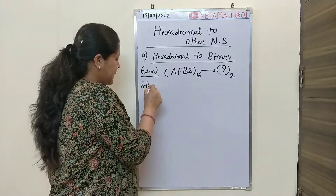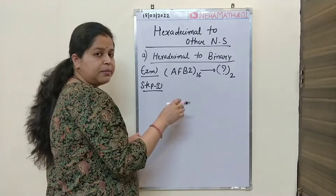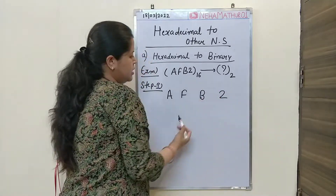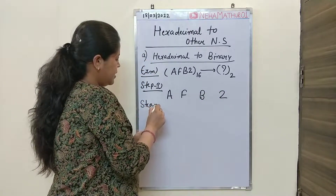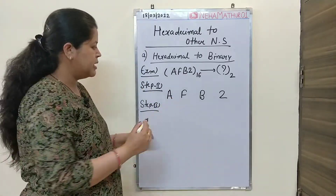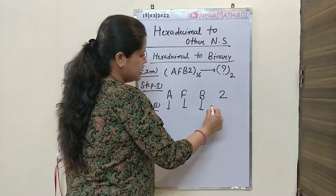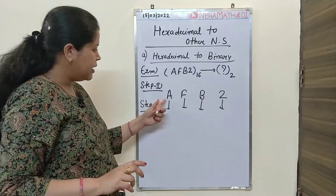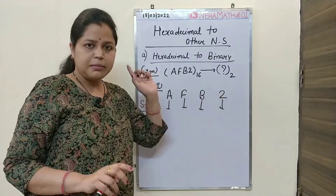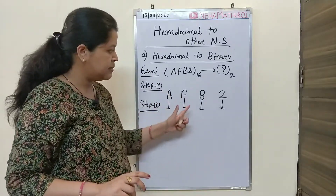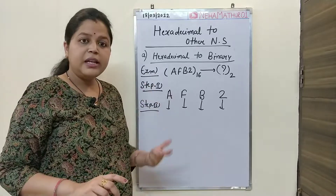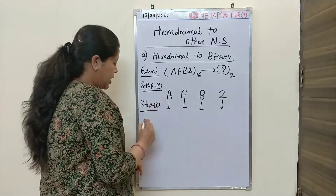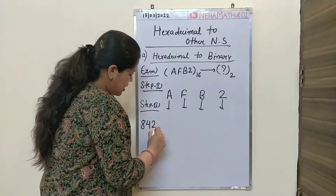The first step is to write down the given hexadecimal number with proper spacing. The second step is to convert each hexadecimal digit into its 4-bit binary equivalent. After writing the complete hexadecimal number, convert each hexadecimal digit into the equivalent binary number using the short trick method which is the 8421 concept. Just write down 8421 in the corner.